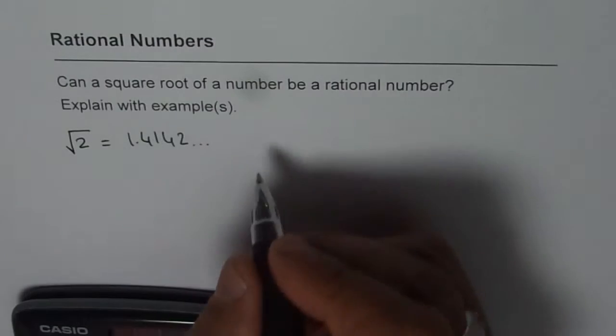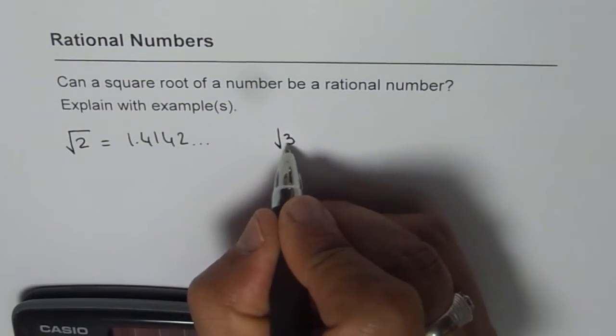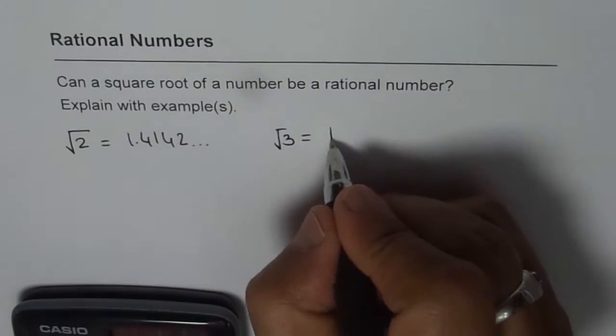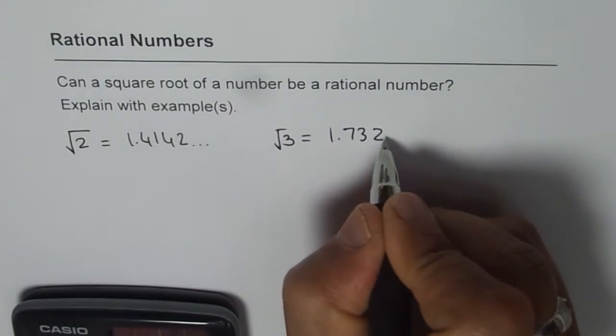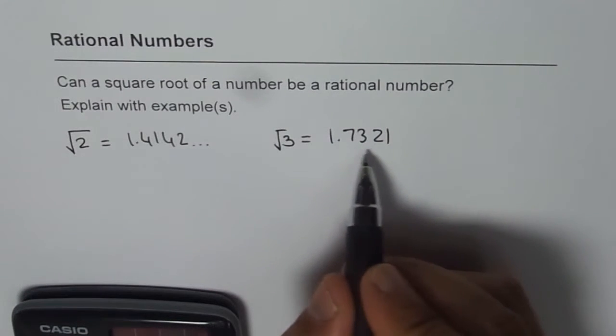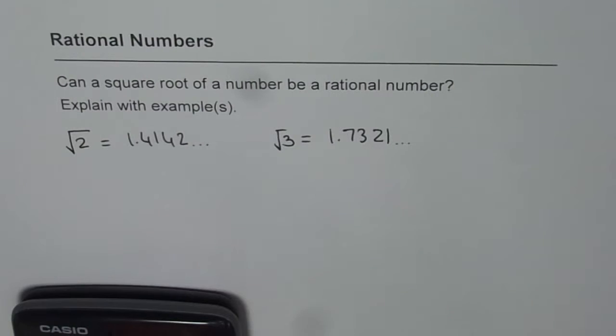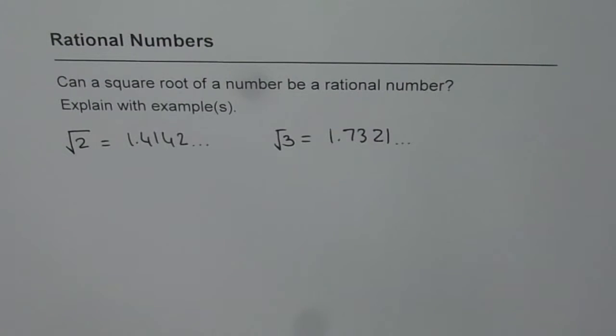Now let us check what is square root of 3. Square root of 3 is equal to 1.7321. Here also we have a decimal number which does not repeat. We know non-repeating decimal numbers are not rational numbers since we cannot write them as a over b. So that is why these square roots are not rational numbers.